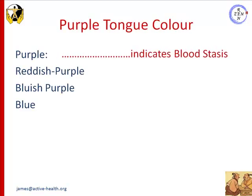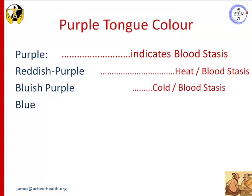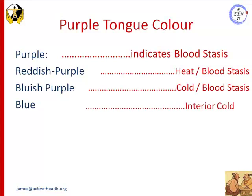The purple tongue usually indicates blood stasis. If it's reddish purple, it indicates blood stasis due to cold. A blue tongue or blue hue on the tongue is indicative of interior cold.